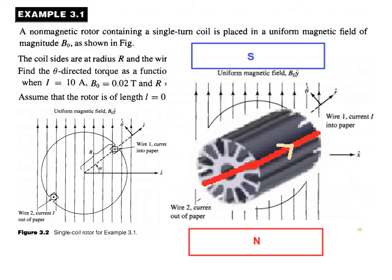The coil sides are of radius R — from the center out to this point is radius R. We have to find the theta-directed torque. This gave me a tough time figuring out what that means, but I found out that it refers to the torque in the perpendicular direction — that is the theta-directed torque.